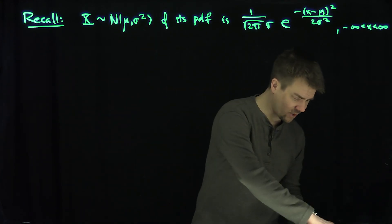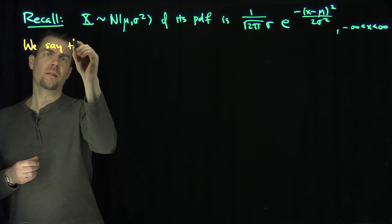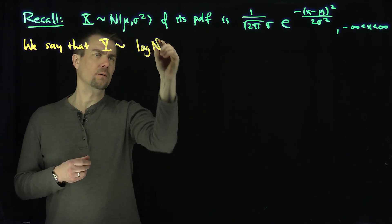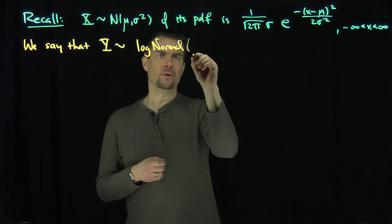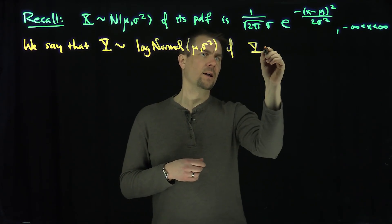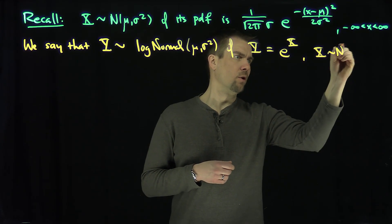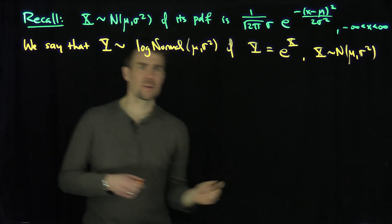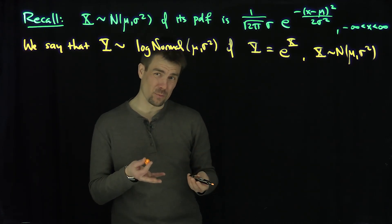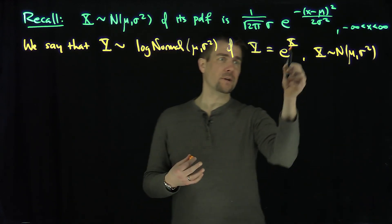Now we're going to define a new type of variable. We say that y is log-normal with parameters mu and sigma squared if y equals e to the x, where x is normal with parameters mu and sigma squared. So y is log-normal if it's the exponential of a normal random variable — log normals are exponentials of normals.